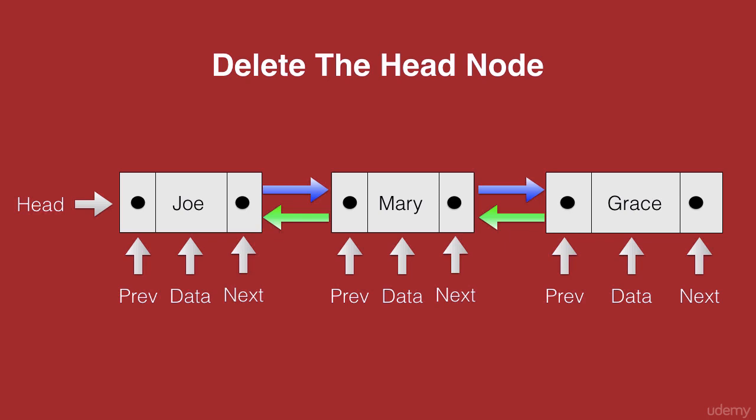It is the head node with the data Joe that we wish to delete. Once Joe is removed from the doubly linked list, Mary needs to be the new head node. Let's see how to do that.